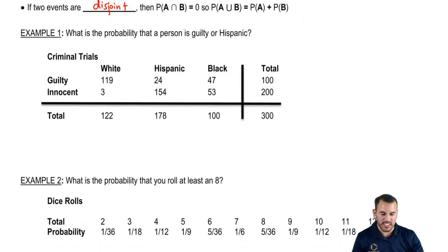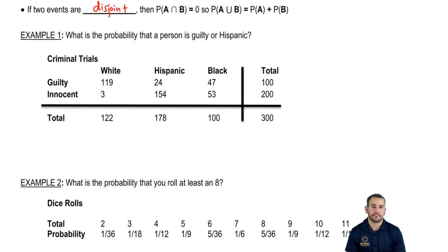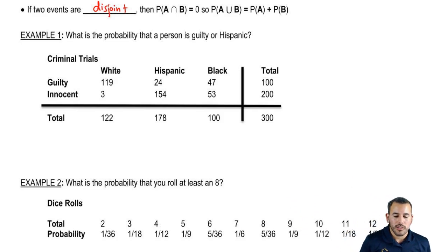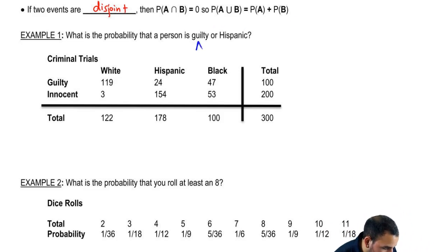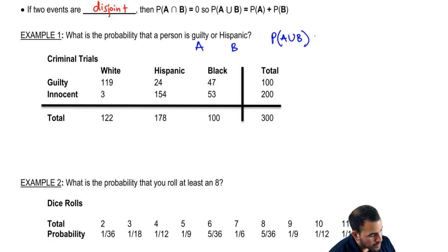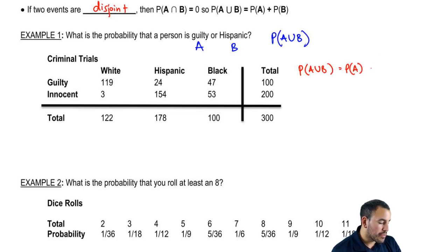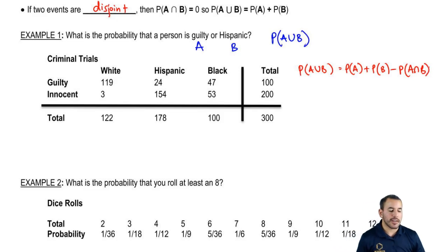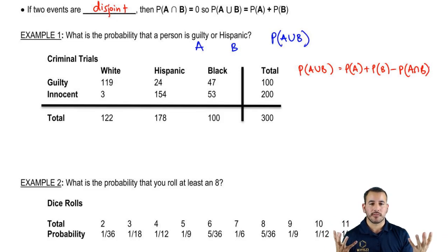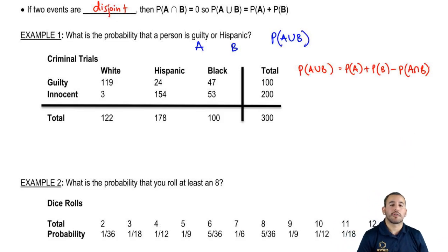So let's apply some of this information. What's the probability that a person is guilty or Hispanic? Here I have some criminal trial data — whether they're guilty or innocent and also different ethnicities. We'll say guilty is event A, Hispanic is event B, and we're looking for P(A or B). Probability of A or B is probability of A plus probability of B minus the probability of A and B. The reason we include that final term is because these events aren't disjoint — someone can be found guilty and also be Hispanic. So there is a probability of A and B.